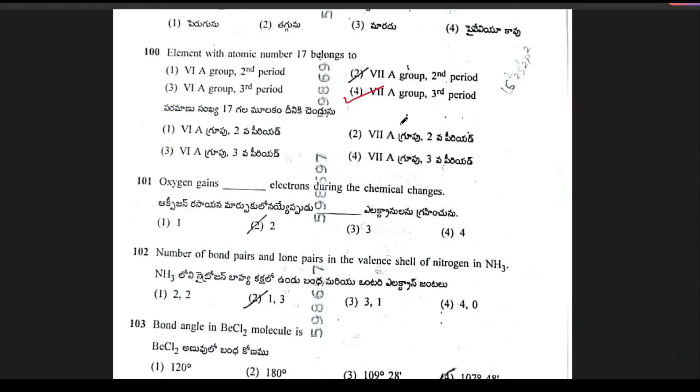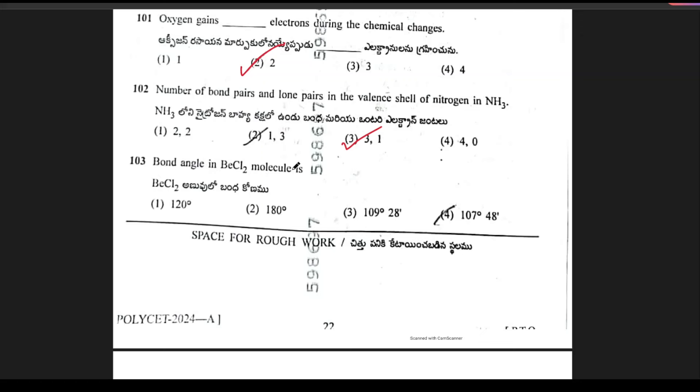Oxygen gains blank electrons during the chemical changes. Options are 1, 2, 3, 4. It is 2. Next, number of bond pairs and lone pairs in valence shell of nitrogen in NH3. That is 3 and 1. Option 3 is the right answer. Next, bond angle in BeCl2. In the molecule, the bond angle is 180 degrees. Option 2 is the right answer.